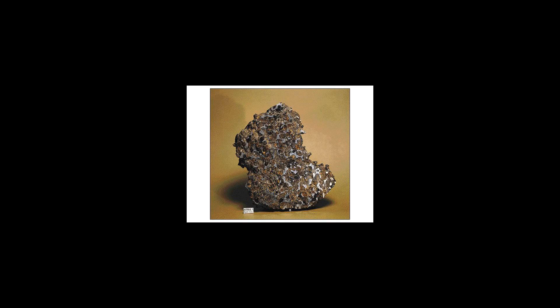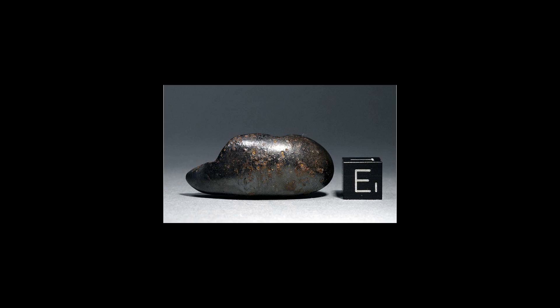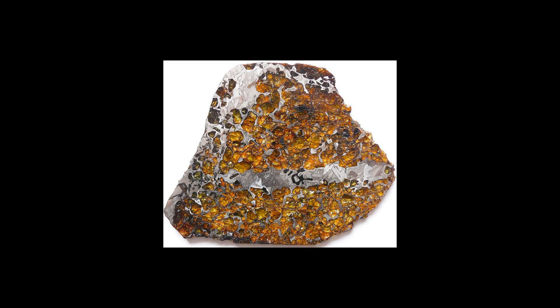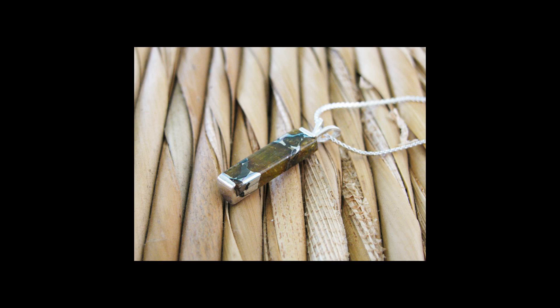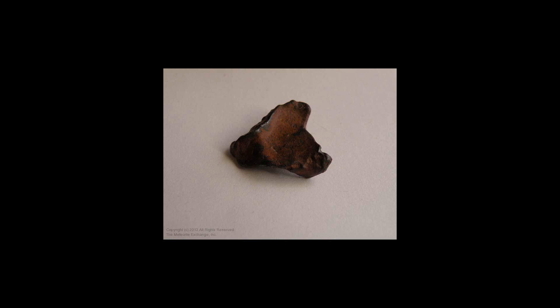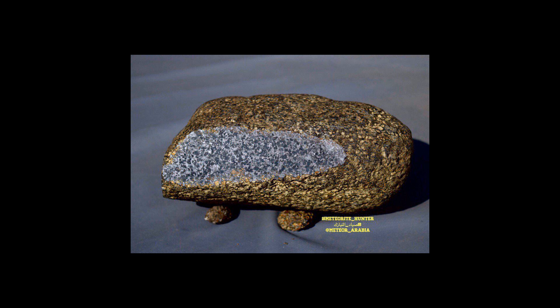Pallasites have a matrix of meteoric iron with embedded silicates, most of it olivine. Mesosiderites are breccias which show signs of metamorphism. The meteoric iron occurs in clasts instead of a matrix.